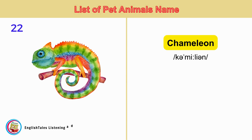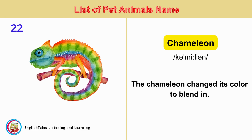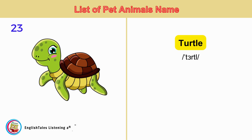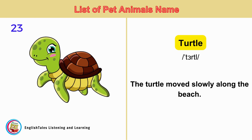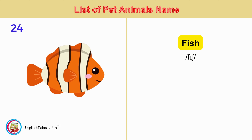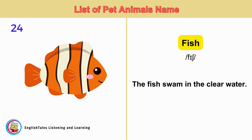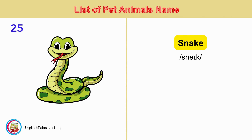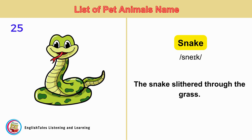Chameleon. The chameleon changed its color to blend in. Turtle. The turtle moved slowly along the beach. Fish. The fish swam in the clear water. Snake. The snake slithered through the grass.